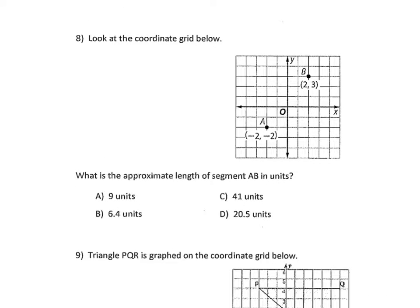Number four: look at the coordinate grid below. What is the approximate length of segment A to B? I've got A, I've got B, I'm going to connect those and then make a right triangle. This whole test is Pythagorean theorem, so we're looking for C — that's our diagonal side, our longest side. I'll count the squares to get each side length: one, two, three, four, five and one, two, three, four.